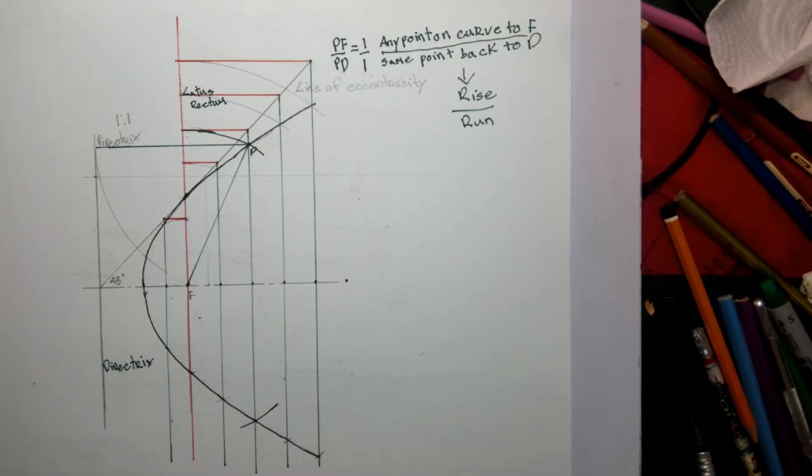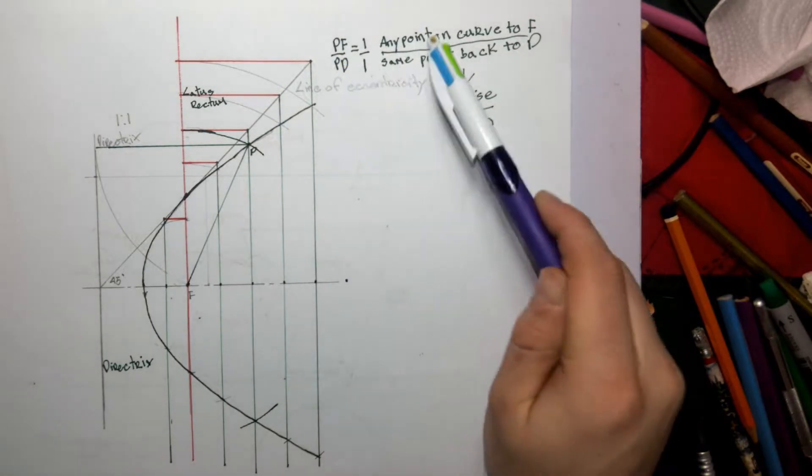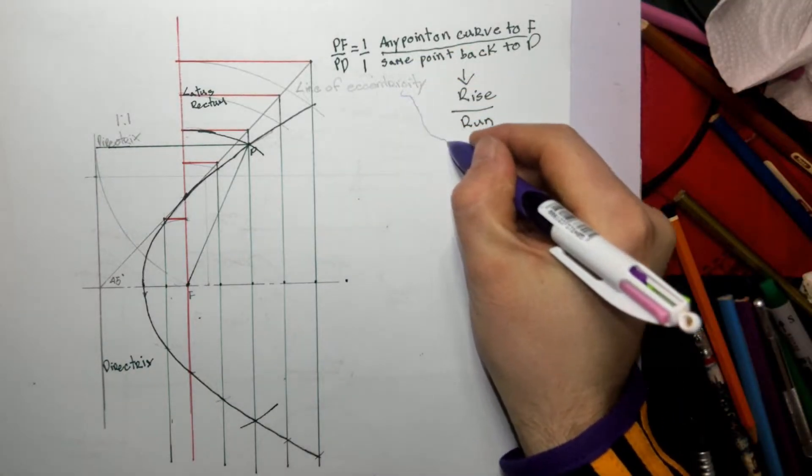This is what our finished question will look like when we're drawing a parabola using the eccentricity method. The key concept is PF—any point in the curve back to the focus—is equal to that same point back to the directrix. We achieve that using a line known as the line of eccentricity.